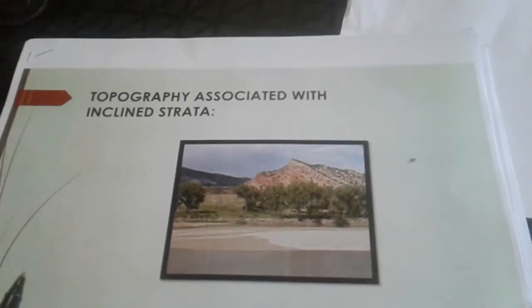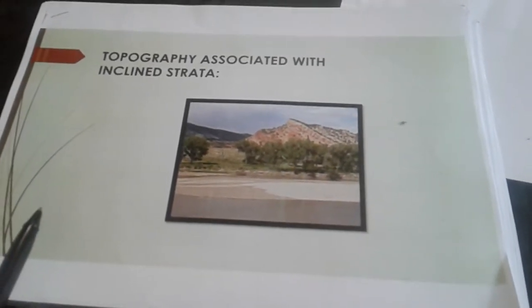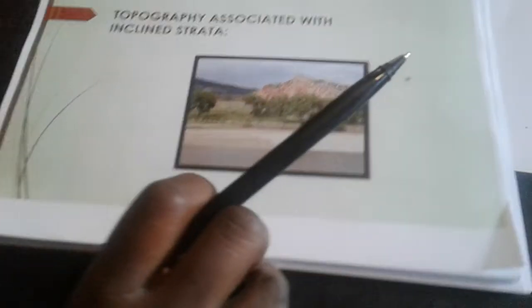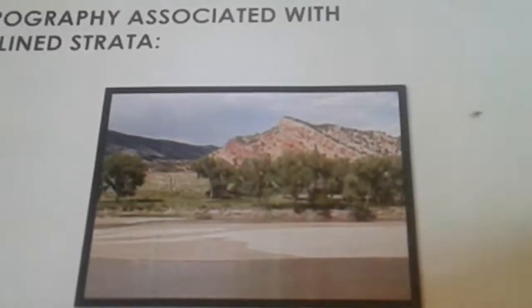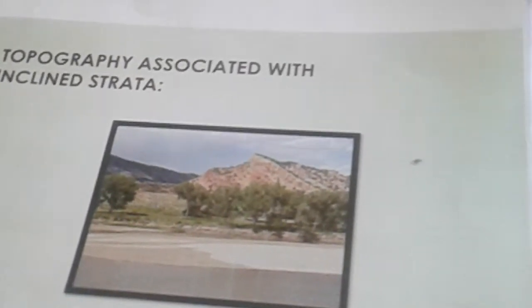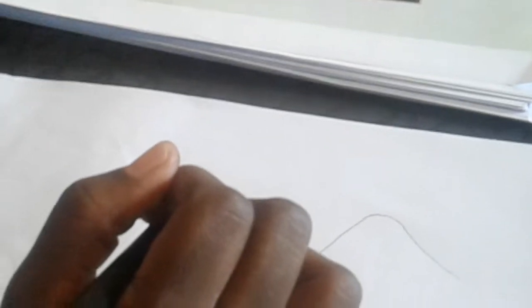When we talk about inclined strata, we are talking about tilted platforms, as you can see in the diagram. To make it simpler, we are basically talking about landforms that you did in Grade 10 — landforms that are a result of folding and faulting, when we had compressional forces acting in the earth's crust.